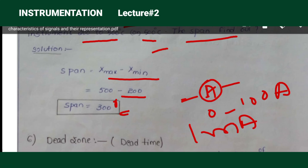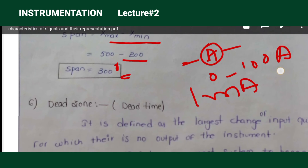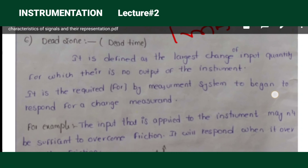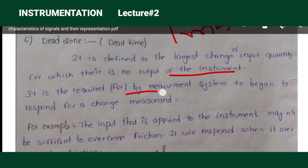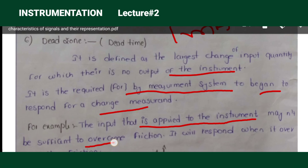Dead zone is defined as the largest change of input quantity for which there is no output from the instrument. Up to some incremental input, the measuring instrument will not begin to respond. For example, if you apply 1 milliamp to a 100-amp ammeter, it won't overcome the friction and losses — the instrument responds only when input exceeds the friction threshold.